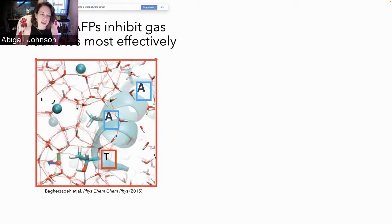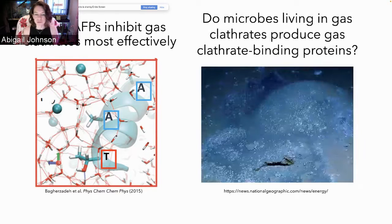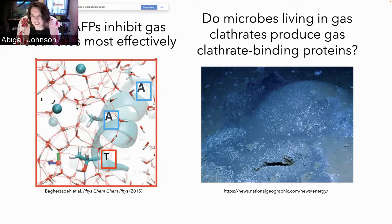It was the alpha-helical Type 1 AFPs that were found to inhibit gas clathrates most effectively out of all the AFPs. This molecular dynamics simulation shows that it's the pendant methyl groups of the threonine-alanine-alanine motif that actually get inserted into the empty half-cages of methane clathrate.